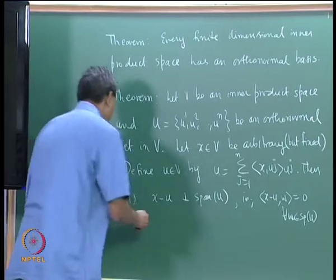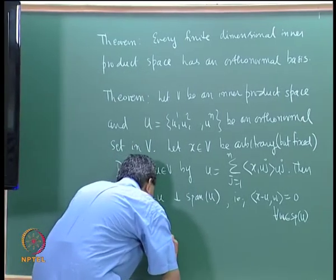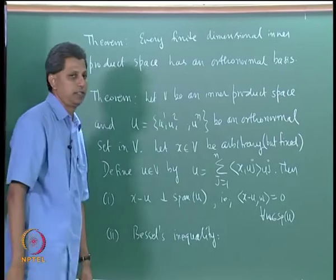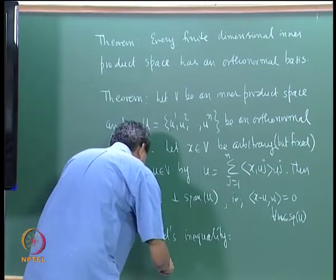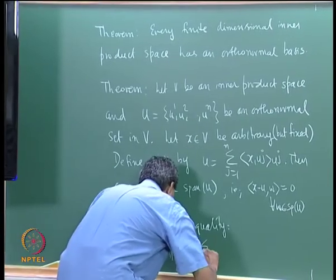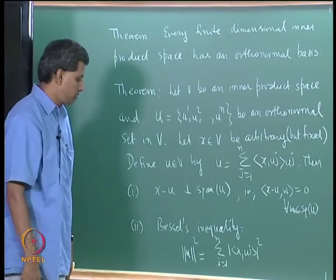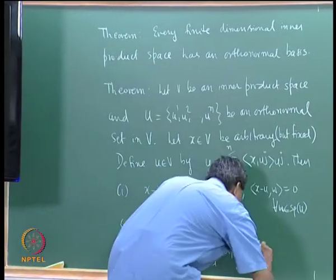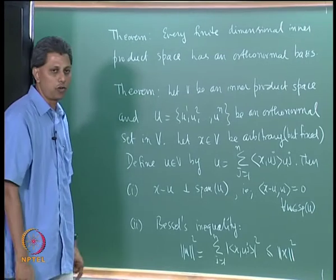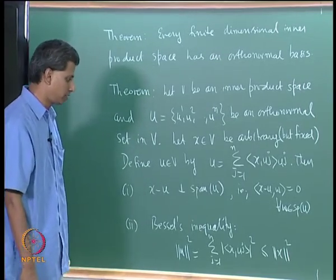The second property is called Bessel's inequality. The norm of u squared equals the sum from j equals 1 to n of the modulus of the inner product of x with uj, squared, and this does not exceed the norm of x squared. So if you know the inner products ⟨x, uj⟩, this sum does not exceed ‖x‖².